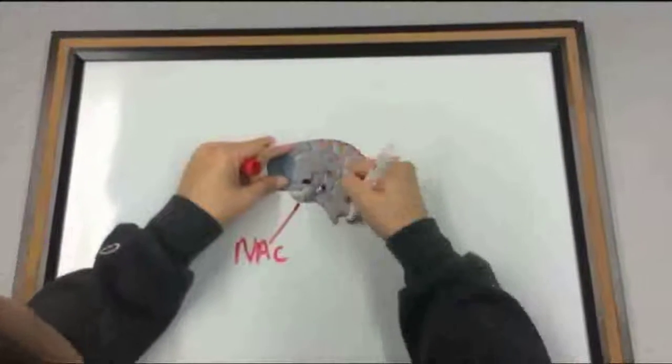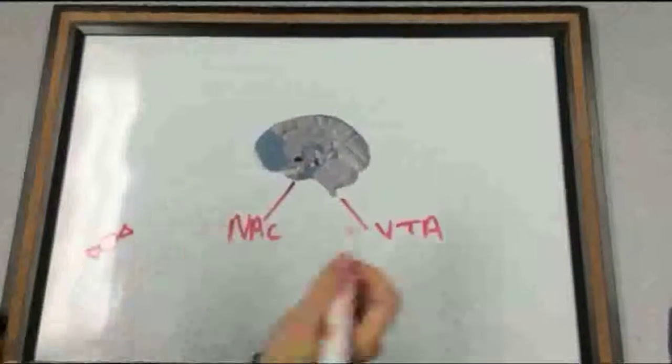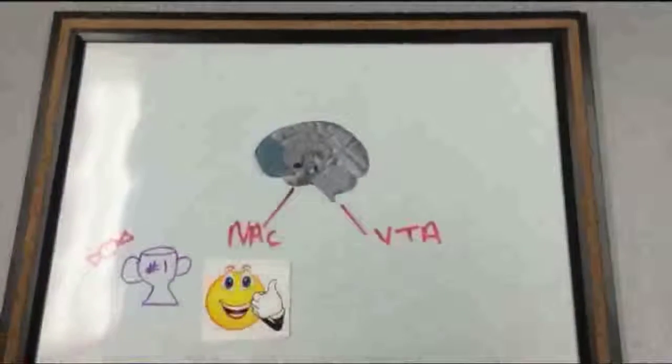The NAC is involved in motivation, pleasure, reward, and reinforcement learning. This might already be telling of how this part of the brain plays a vital role in addiction.